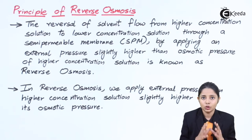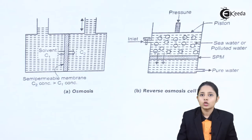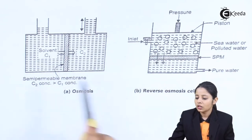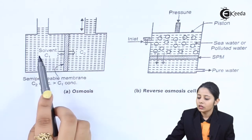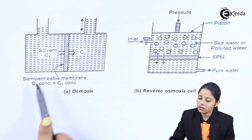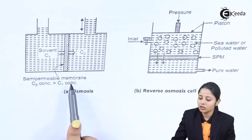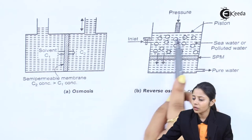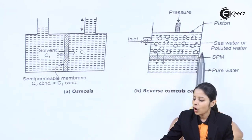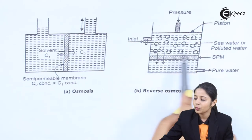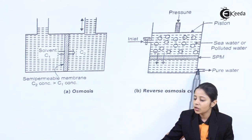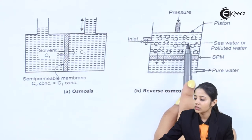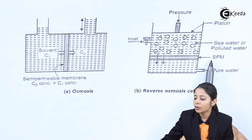Let me explain the entire principle with the help of a diagram. On one side we have osmosis, and on the other side we have reverse osmosis. In the reverse osmosis diagram, the water on one side is sea water or polluted water — the water which needs to be purified — and the water on the other side is pure water. With just this one semi-permeable membrane in between, the sea water gets converted into pure water.